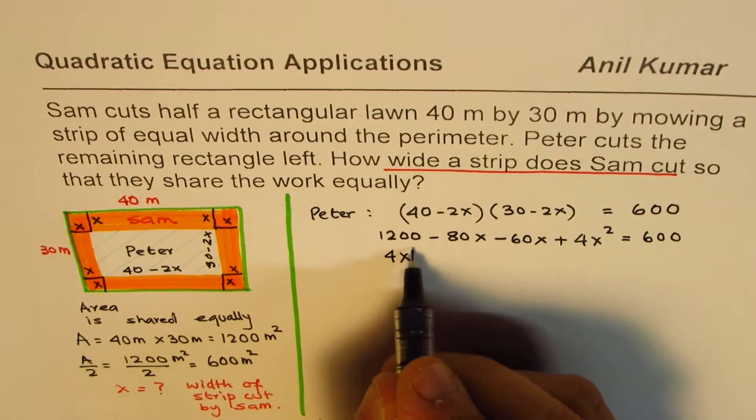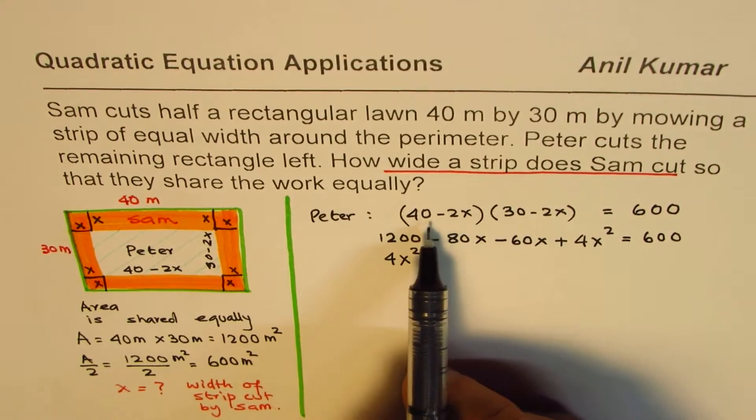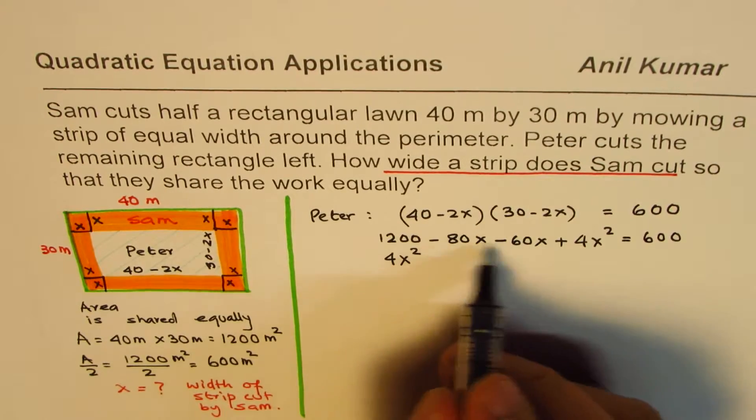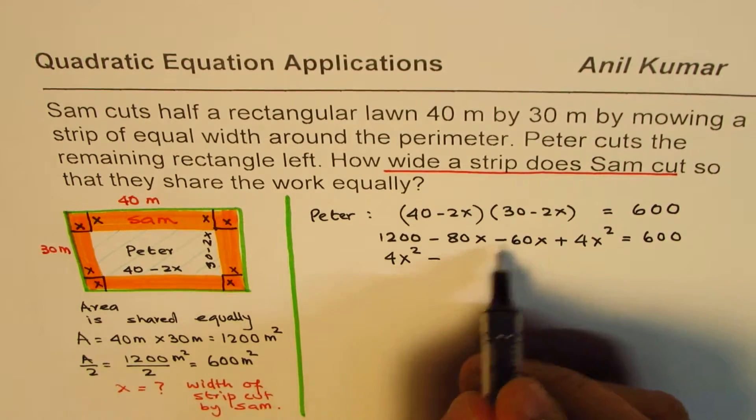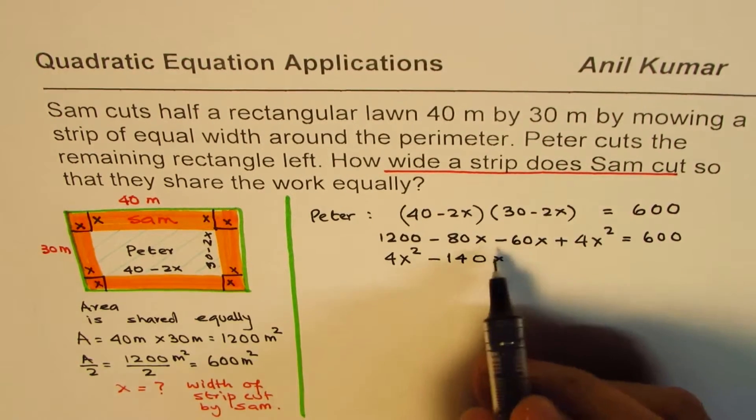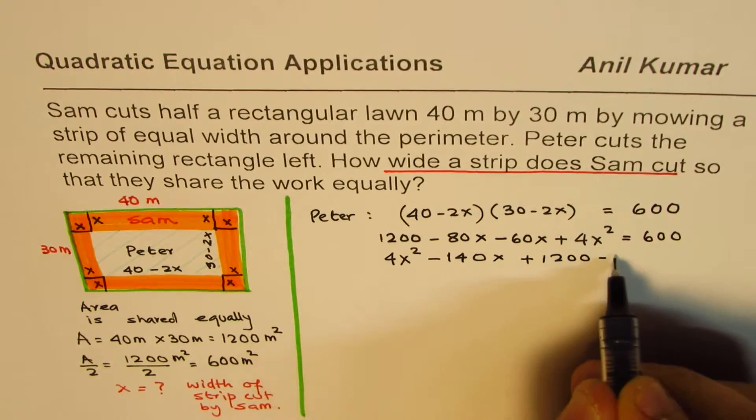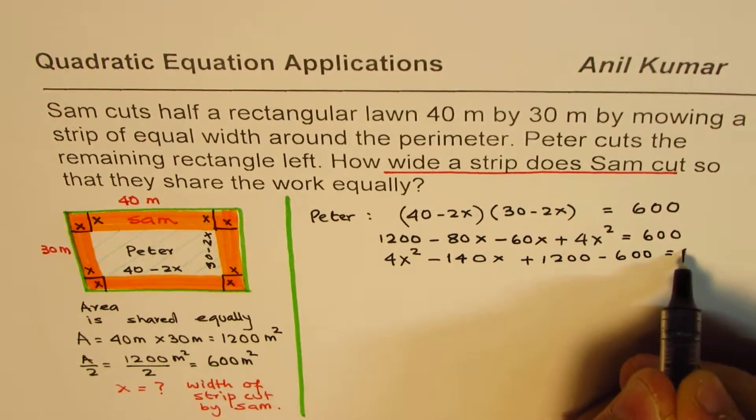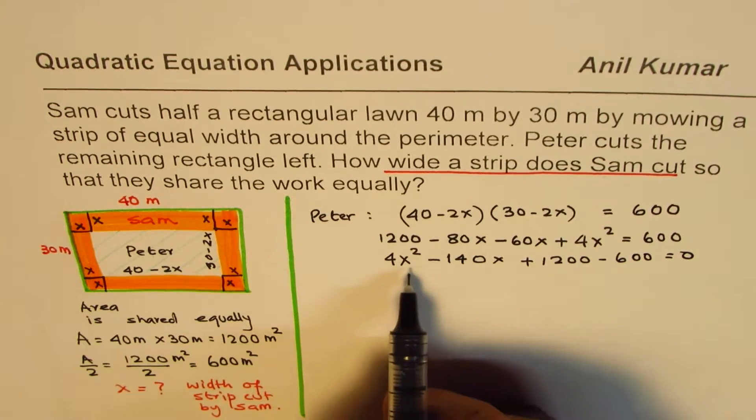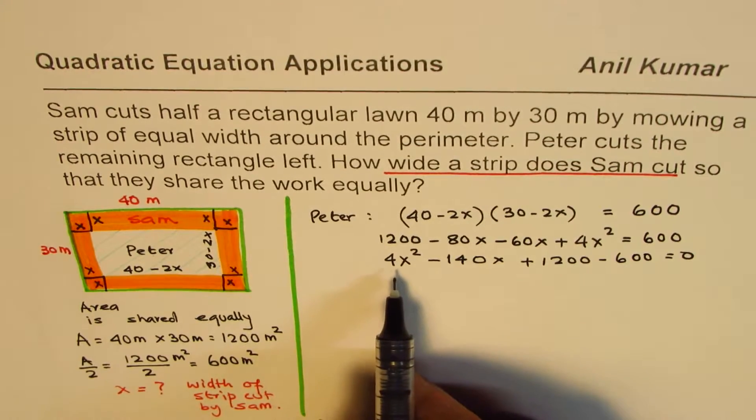Bring the terms together and rearrange. 4x² - always write highest degree first - 80 and 60 when you combine them, 8 and 6 is 14, so we have minus 140x. Let's bring 600 to the left side, so we have plus 1200 minus 600 equals zero.